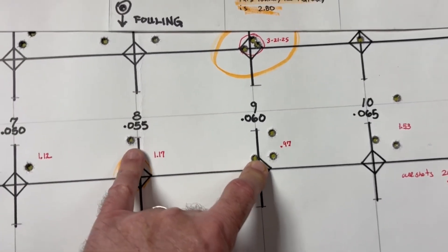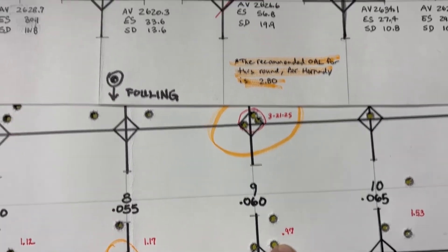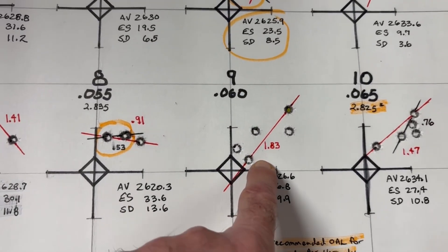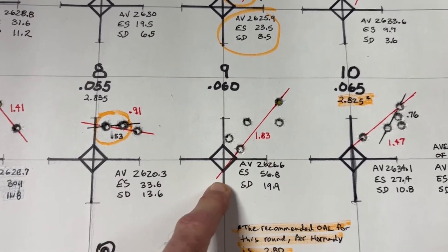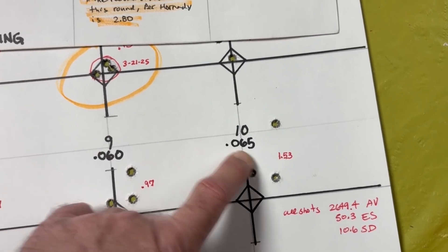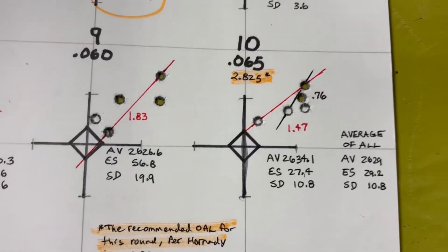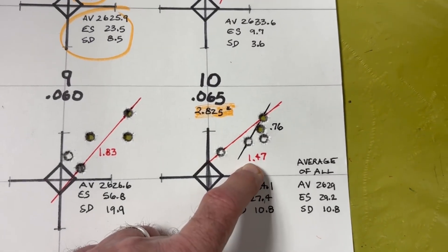Okay, and so three weeks ago at 60 thousandths, we had a 0.97. Today, it was double that at 1.83. And then number 10, three weeks ago at 0.65 was 1.53. Today, it was very similar, 1.47. But your best four out of five did group there at 0.76 inches.